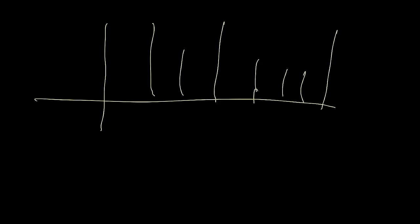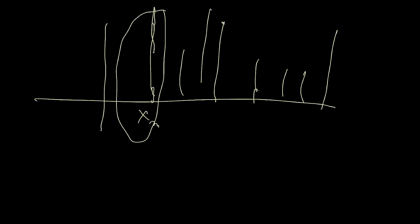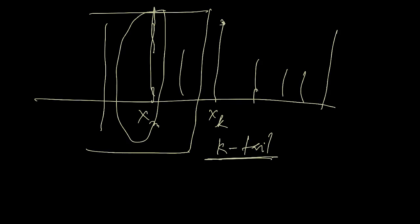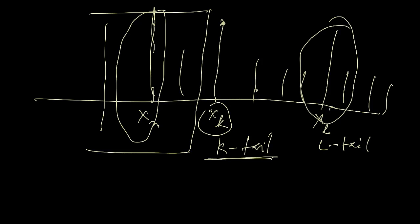Suppose you have a sequence where some term xm has all subsequent terms smaller than it — then xm is a peak. More precisely, consider the k-tail of the sequence starting at xk; if xk is the largest term in that tail, then xk is a peak. Similarly, if we consider the l-tail starting at xl and xl is the largest, then xl is a peak.